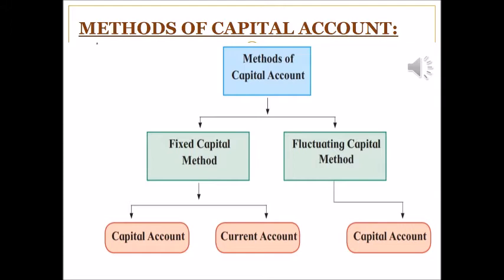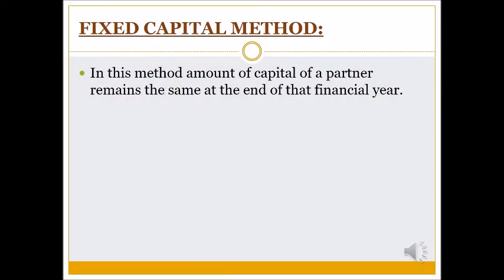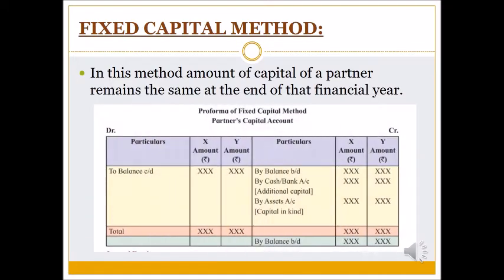In Fixed Capital Method we have to open two accounts: Capital Account and Current Account. In Fluctuating Capital Method, only Capital Account is needed. In Fixed Capital Method, the amount of capital of a partner remains the same at the end of the financial year — it is not going to be changed throughout the year. Therefore we prepare a separate Partners Capital Account.